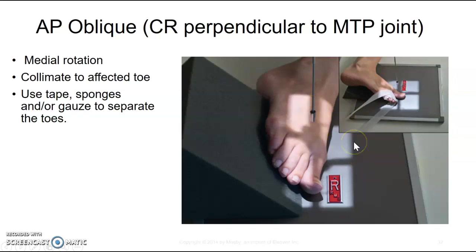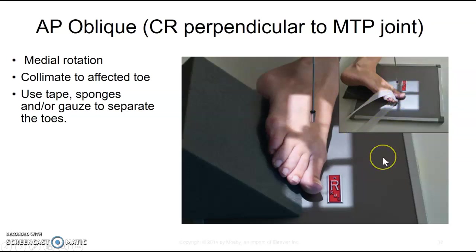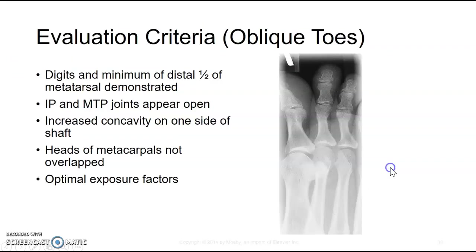You're going to collimate to the affected toe and use tape, sponges, or gauze to separate the toes you don't want involved, so they don't superimpose over the area of interest. Ideally, you separate the toe from the others.